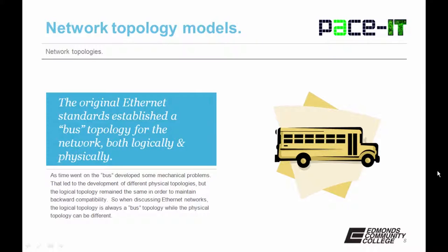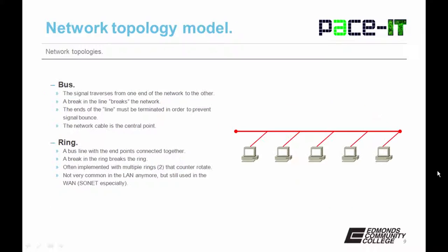When we discuss Ethernet networks, the logical topology is always a bus topology, while the physical topology can be different. The signal traverses from one end of the network to the other. A break in the line breaks the network. The ends of the bus line needed to be terminated in order to prevent signal bounce — if there was a break or the ends were not terminated, when the signal reached the end it would bounce back and create a storm. In a bus topology, the network cable is the central point.